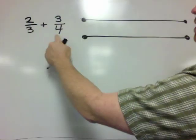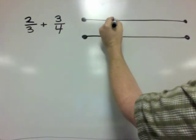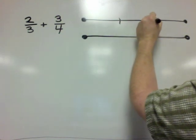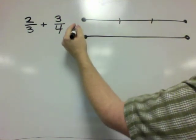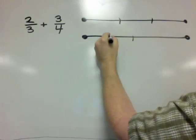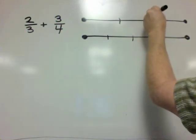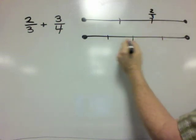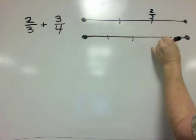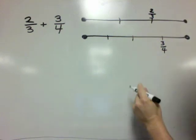The first thing I'm going to do is draw both of these fractions on the number line. Two-thirds looks about like that — here's two-thirds right here. And here's three-fourths right here.